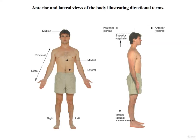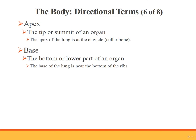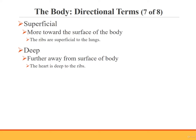This figure gives anterior and lateral views of the body illustrating the directional terms discussed. Apex refers to the tip or summit of an organ — for example, the apex of the lung is at the clavicle. Base refers to the bottom or lower part of an organ — for example, the base of the lungs is near the bottom of the ribs. Superficial refers to more toward the surface of the body — for example, the ribs are superficial to the lungs. Deep means further away from the surface — for example, the heart is deep to the ribs.